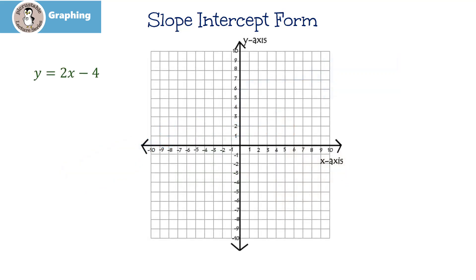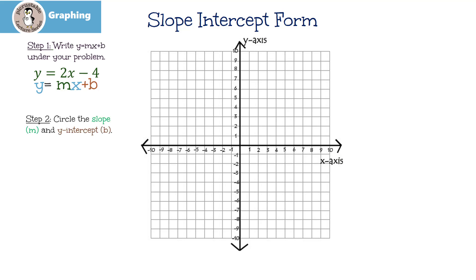Let's graph one — that's probably the easiest way to show you how to do this. So here's our equation: y equals 2x minus 4. The first thing we want to do is write y equals mx plus b right underneath it. I love to do this, because then all I have to do is circle to find my slope, which is 2, and then circle the b, which is negative 4, to find my y-intercept. I mean, really, how easy is that?